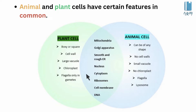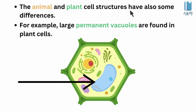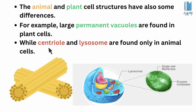Animal and plant cell structures also have some differences. Large permanent vacuoles are found only in plant cells, while centrioles and lysosomes are found only in animal cells.